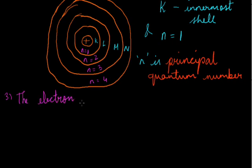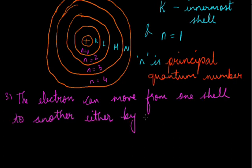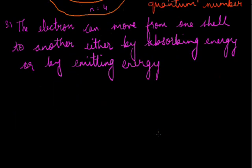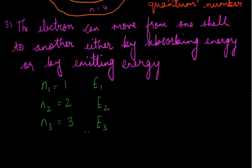Now the third point what he said, the electron can move from one shell to another either by absorbing energy or by emitting energy. The electron can change or move from one shell to another. If it moves from a lower shell to a higher shell, then it will always absorb energy. And when it moves from higher shell to a lower shell, then it will emit energy. For example, if I say the energies for n1 shell is E1, n2 shell is equal to E2 and n3 shell is equal to E3, then E3 is the shell which has more energy than E2 and E1. So we can make a relation that E3, that is energy of the third shell, is greater than energy of the second shell which is greater than the energy of the first shell.